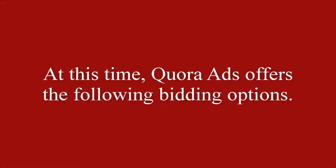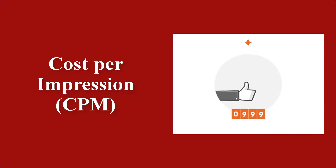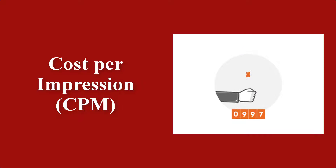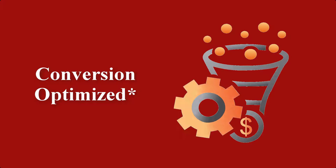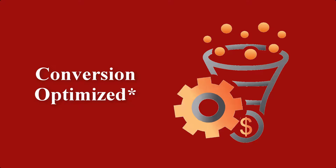At this time, Quora Ads offers the following bidding options. Cost per click, or CPC: bid and pay per click on your ad; minimum bid is $0.01. Cost per impression, or CPM: bid for 1,000 impressions and pay per impression; minimum bid is $0.20. And conversion optimized: bid for a target CPA and pay per impression.